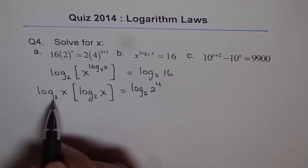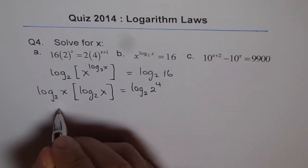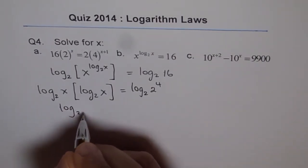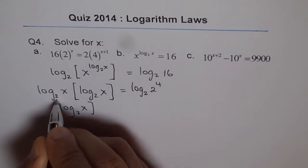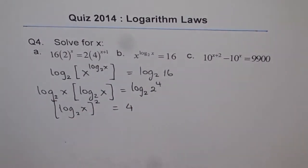Now here, log 2x, log 2x becomes log 2x whole square. So we can write this as log to the base 2 of x whole square equals to 4.